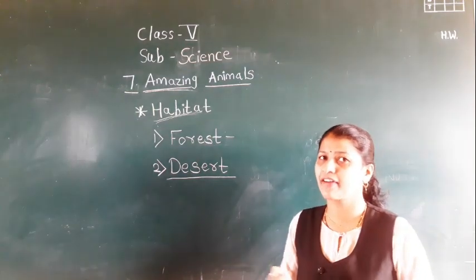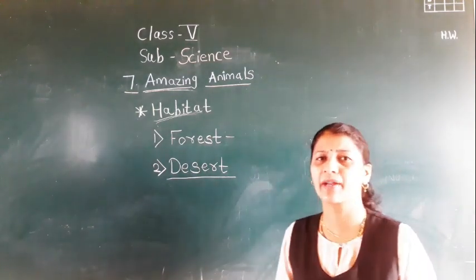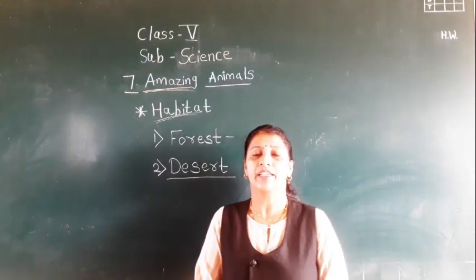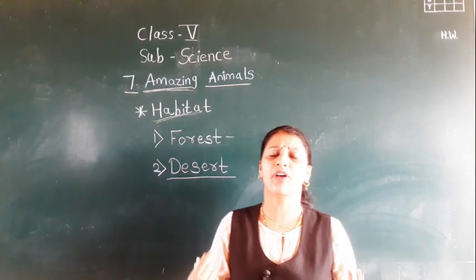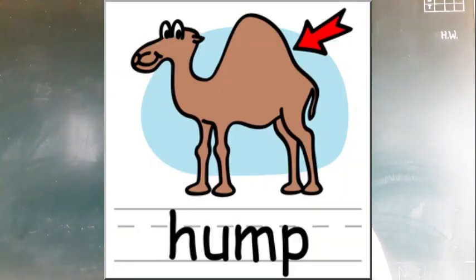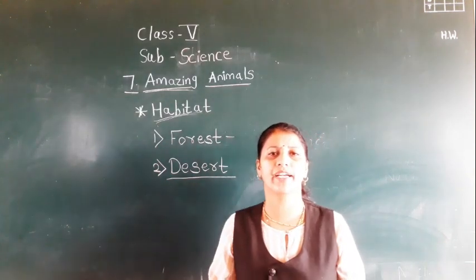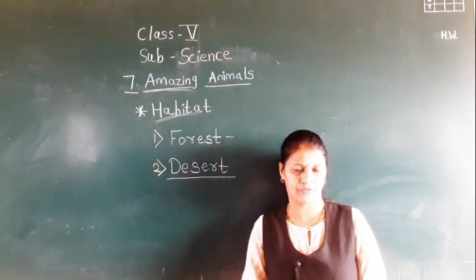In the desert, the most common animal found is the camel. It is called a desert animal. If you see the structure of the camel, it has a very fat hump. It can store food and water for a longer period of time.